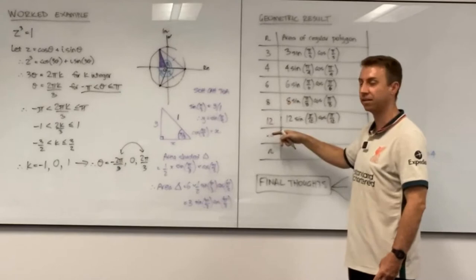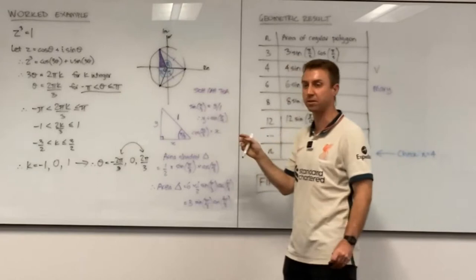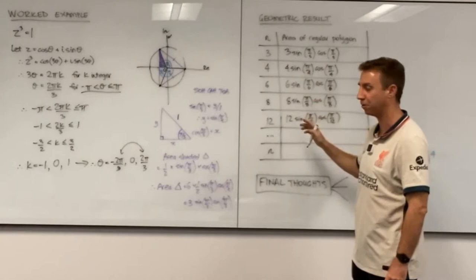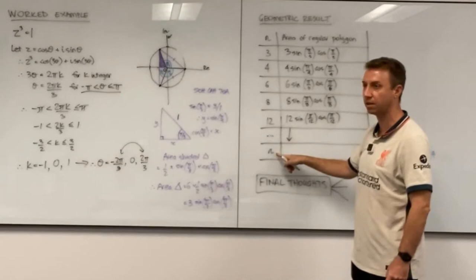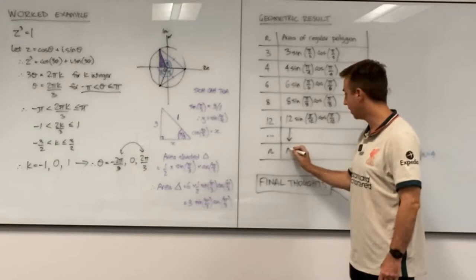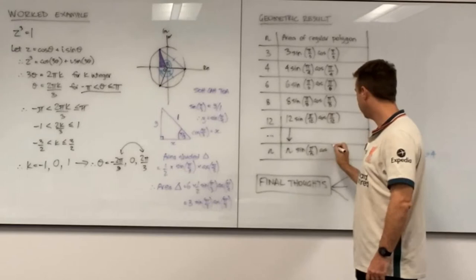So I mean obviously we could do the work to check that, but as you probably noticed the higher n gets the more effort it is because there's more points we need to work out. But hopefully just from this little activity, it's not a rigorous proof, but what would you guess the generic area of an n-sided polygon sitting in a unit circle is? n sin π/n cos π/n. Nice.